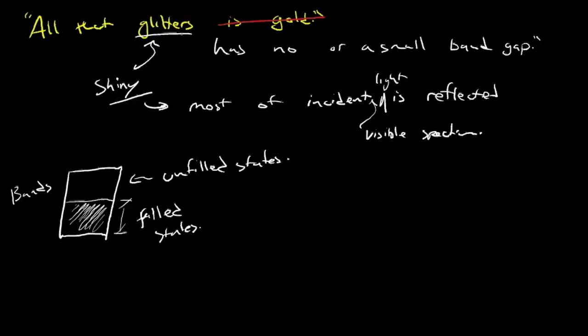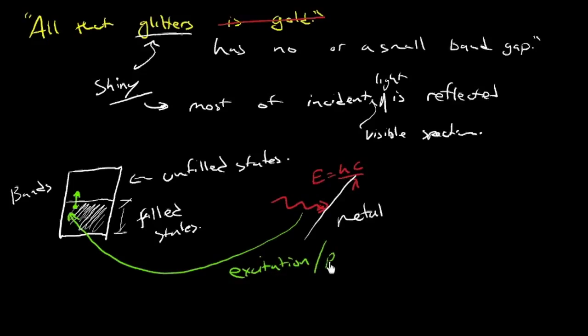What happens when a photon of light - a photon having energy E equals hc over lambda - is incident on a metal? That photon energy is enough to excite an electron up from one of these filled states to a vacant unfilled state. This excitation or promotion means that the photon is absorbed.